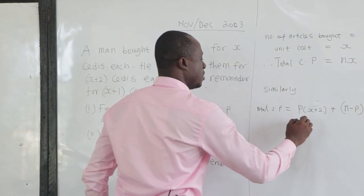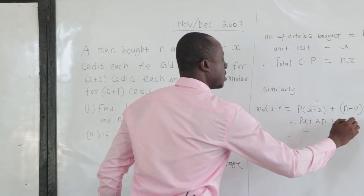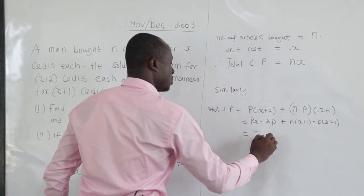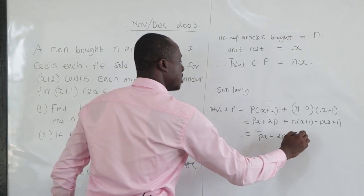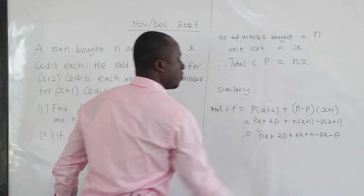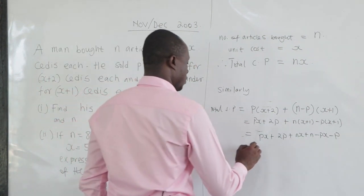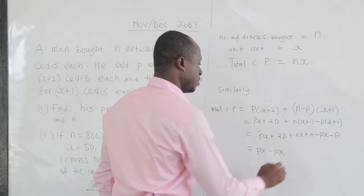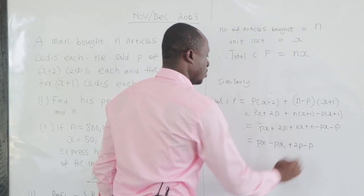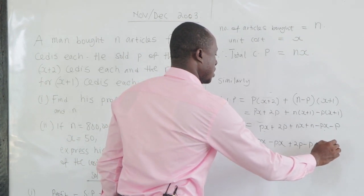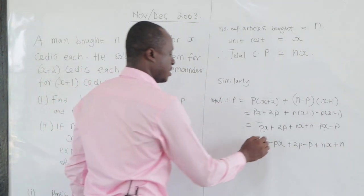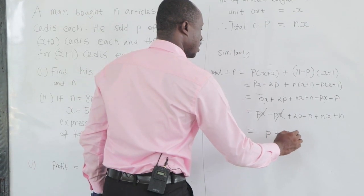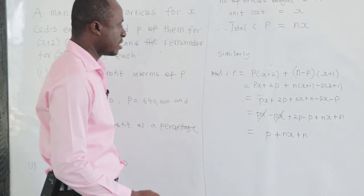Let's expand this. We get PX plus 2P plus NX plus N minus PX minus P. Now grouping terms: the PX and PX cancel out. We have 2P minus P, which is P, plus NX plus N. That is our total selling price.